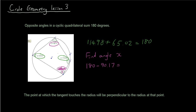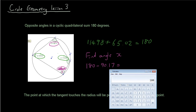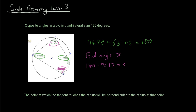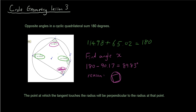The reason you do that is because you know that x plus 90.17 gives you 180, so you take 90.17 away from 180. That gives you 89.83, which is the size of angle x. All you have to remember is that a cyclic quadrilateral is just a four-sided shape in a circle. That is our first theorem.